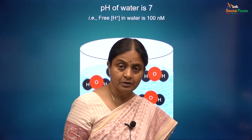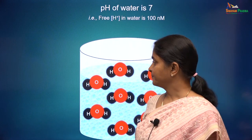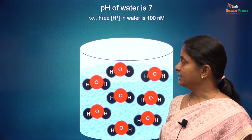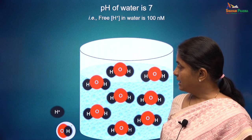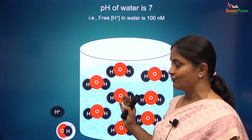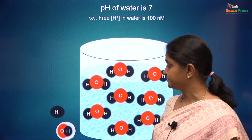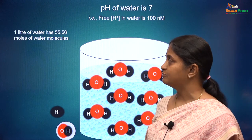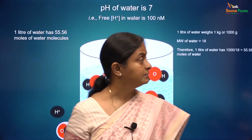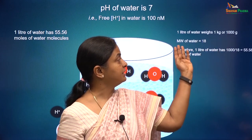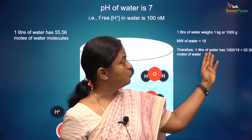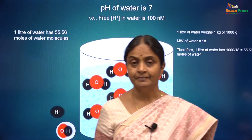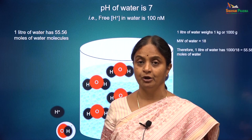Now let us look at water equilibrium. These are stable H₂O molecules — let us see how many there are in a liter of water and how many of those are ionized. A liter of water will have 55.56 moles of water molecules, because a liter of water weighs 1000 g and the molecular weight of water is 18. Therefore, 1 liter has 1000/18 = 55.56 moles.